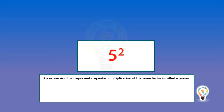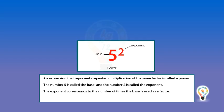An expression that represents repeated multiplication of the same factor is called a power. The number 5 is called the base and the number 2 is called the exponent. The exponent corresponds to the number of times the base is used as a factor.